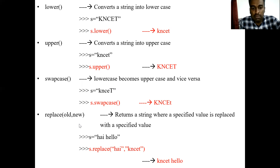Next, the replace() method. It replaces some string or character in an existing string. It returns a string where a specified value is replaced with a new specified value. For example, s = 'pynb', s.replace('py', 'knc') — we want to replace 'py' with 'knc', so the output becomes 'kncb'.